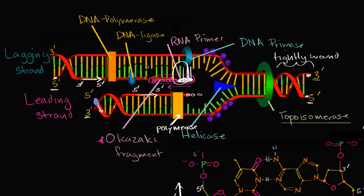So, Okazaki fragments. What you have happening on the lagging strand — and you can think of why it's called the lagging strand — is that you have to create these Okazaki fragments as you follow the opening, which makes it a slower process. But then all of these strands can be put together using DNA ligase. Not only will the strands be joined together, but the RNA primers are also replaced with DNA. And when all is said and done, you're going to have two double strands — one on the lagging strand side, and one on the leading strand side.